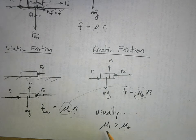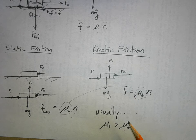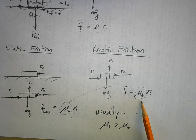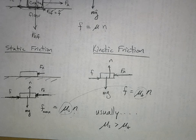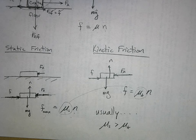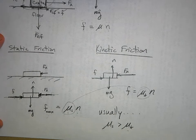Sometimes the static friction and kinetic friction are way different, like with ice. You can get a kinetic friction on ice that's very, very low compared to the static friction with ice, because something weird's going on. Like a skate — if you're skating on ice, that blade actually melts the ice a little bit. You have this little film of water and it makes it really slippery.